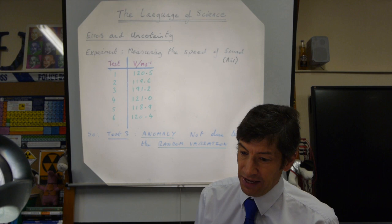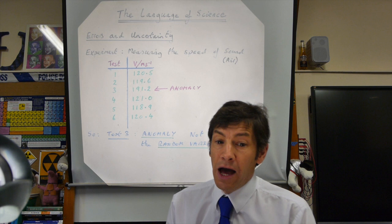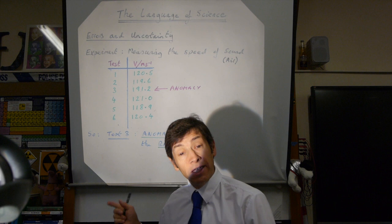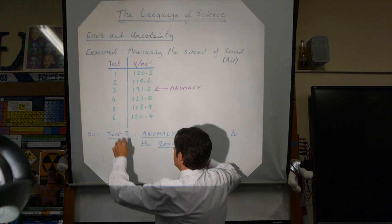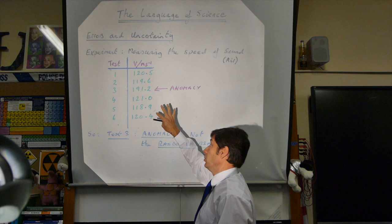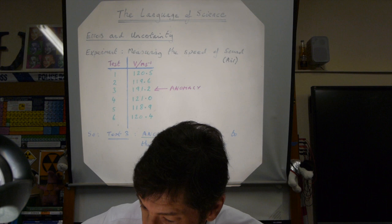It's really important that you remember what you do with anomalies: you put a line through them, you lose them completely from the data. You state them, because you have recorded them, but you make it clear that test 3 has no relevance to the experiment - it's a mistaken value. There are only five useful data points, and those five are what we use to take the mean. We're going to ignore the anomaly - don't use it in any of the mathematics.